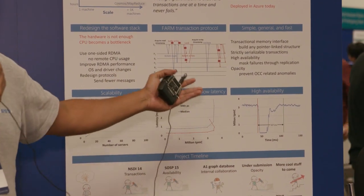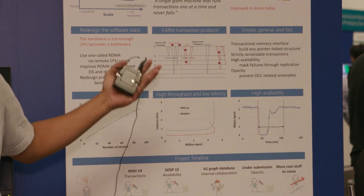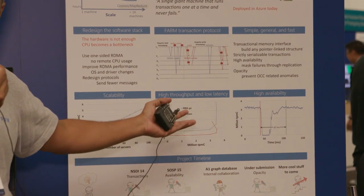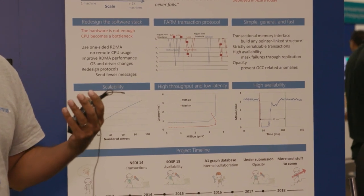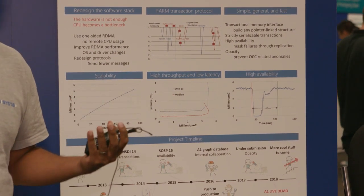So for example, we can recover to full throughput from a failure in 67 milliseconds in this experiment, which is less time than some systems take to commit a single transaction even when they don't have failures.